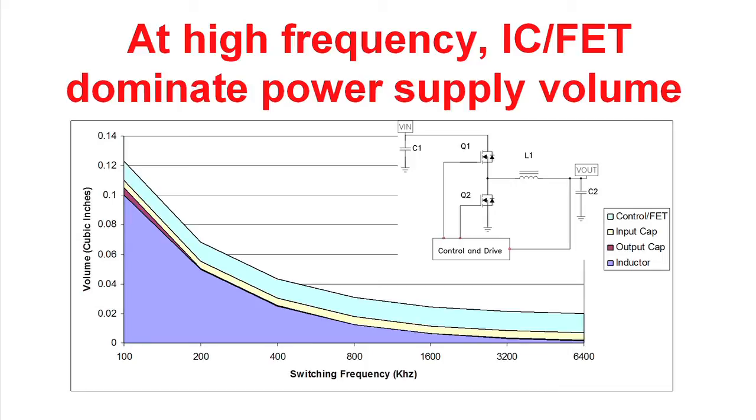The next component on this chart is the output filter capacitor, and its volume is also related to the switching frequency of the power supply. At low frequencies, our choice for the output filter capacitor will be aluminum, and the size won't vary very much. But once we go up into the three to five hundred kilohertz switching frequency, we will be able to use ceramic capacitors and reduce their volume as a function of the switching frequency.